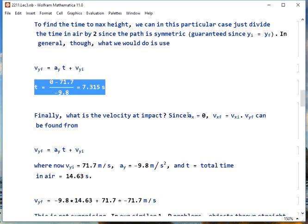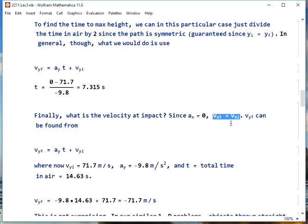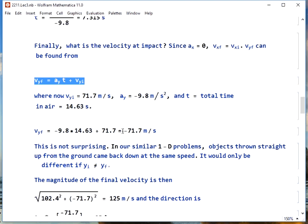Finally, velocity at impact. Ax equals zero, so we know the X component of velocity won't change. Vx final is Vx initial. Vy final, we'll use the same formula and plug in our full time of 14.63 seconds, and we get negative 71.7 meters per second.